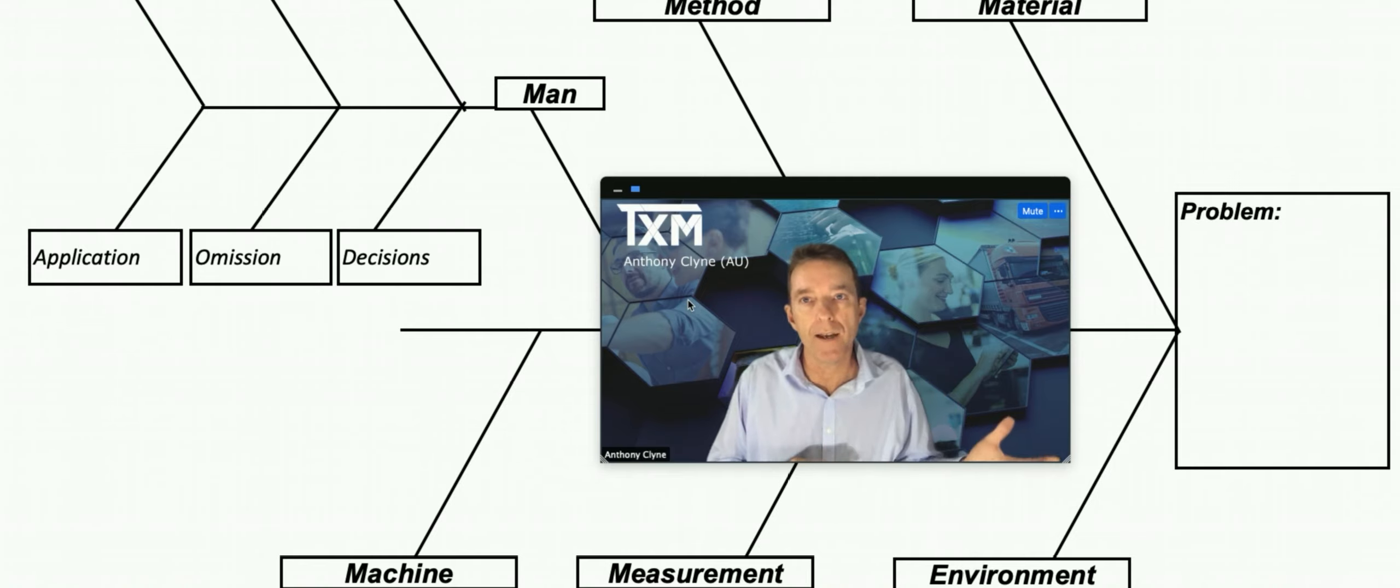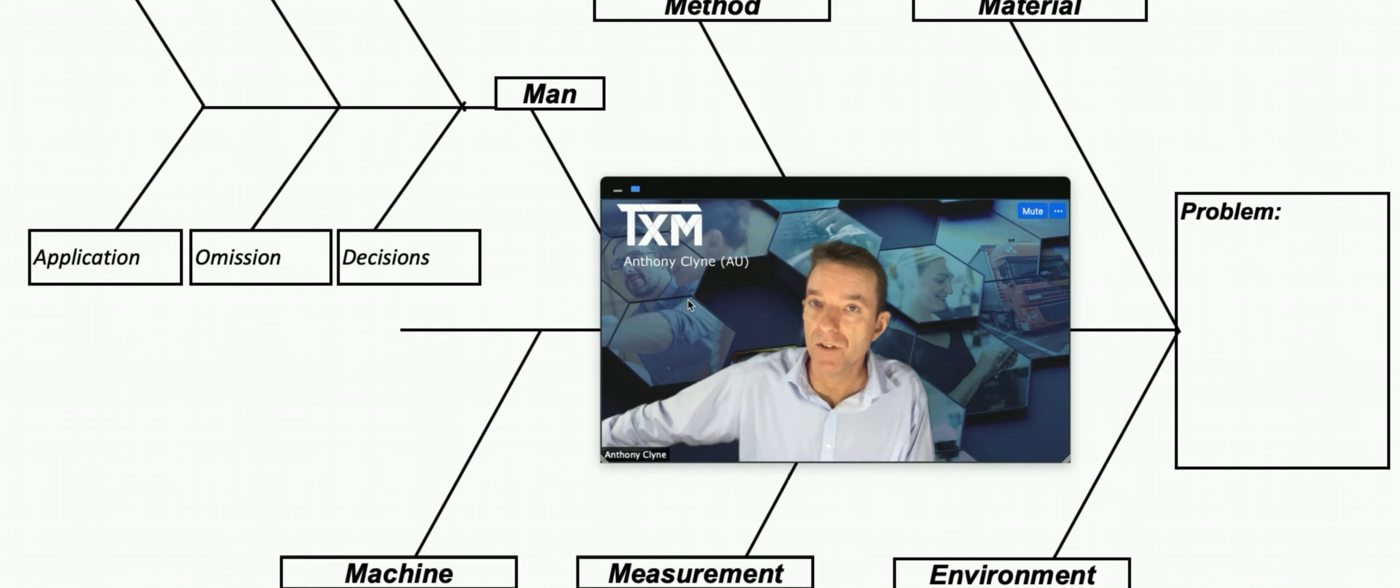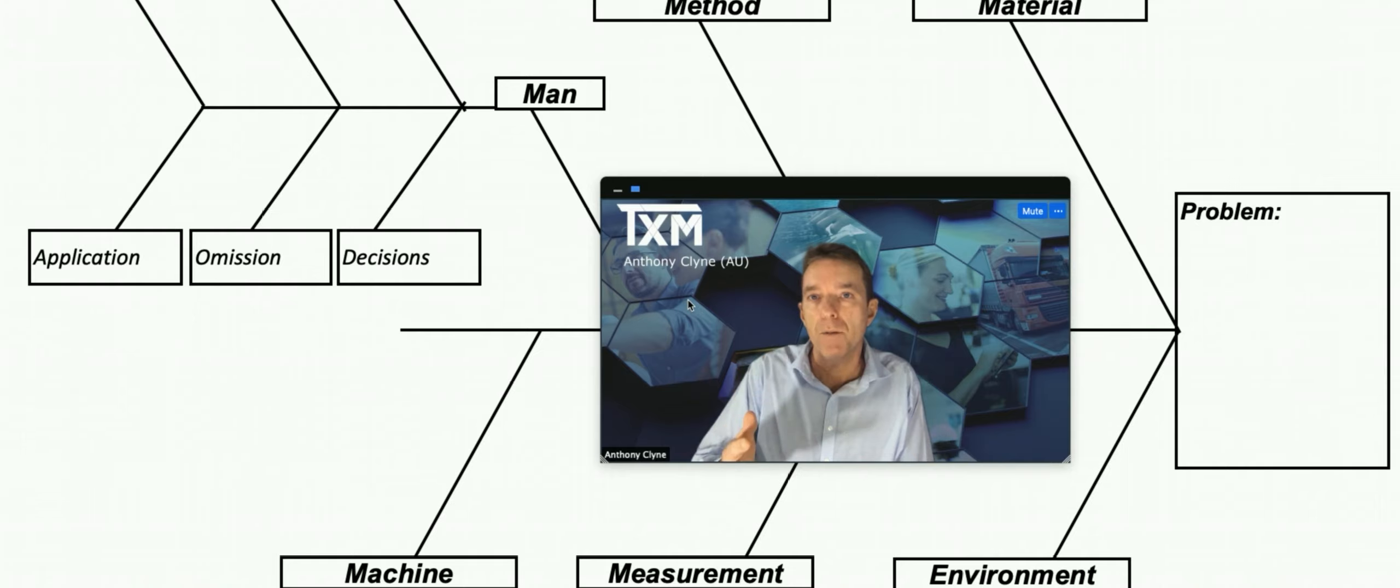The machines, if the machine caused the problem because it was faulty or not maintained properly or any other reason, then that goes in that branch. Measurement is around calibration and the ability to have the right information to make decisions, so often there'll be what we think the number is, we make a decision on that, but if it's wrong then there's a defect.